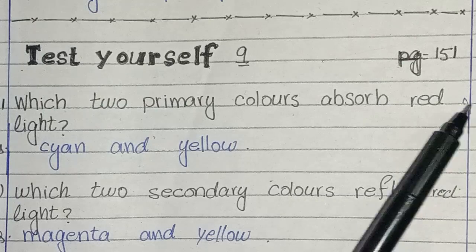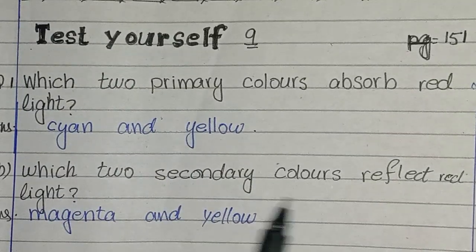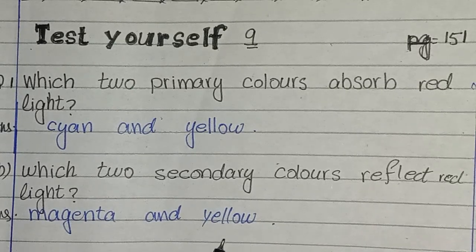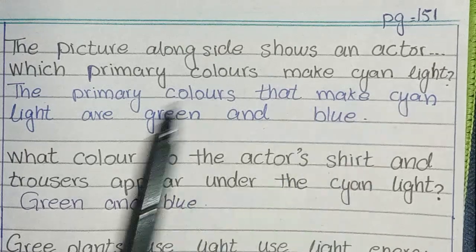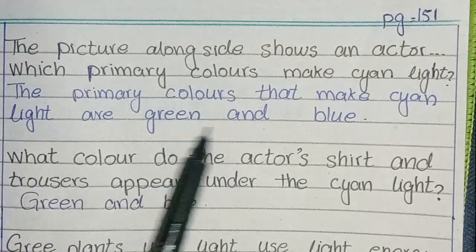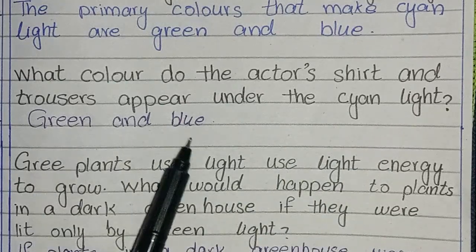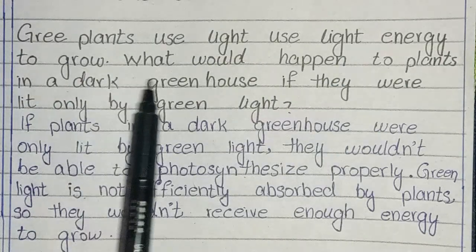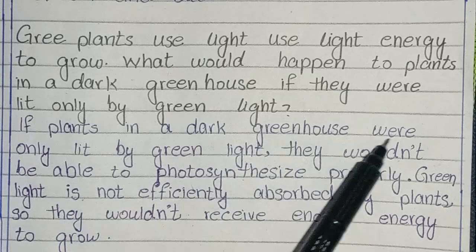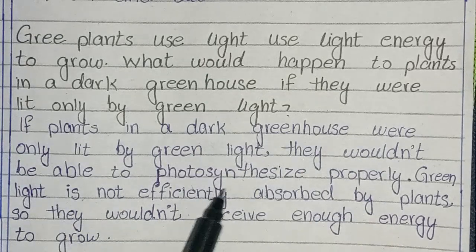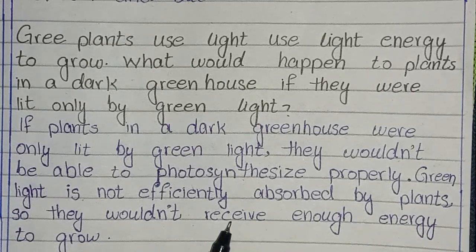Test Yourself 9, page 151. First question: which two primary colors absorb red light? The answer is Cyan and Yellow. Which two secondary colors reflect red light? Magenta and Yellow. Which primary colors make cyan light? The primary colors that make cyan light are Green and Blue. What color do the actor's shirt and trousers appear under cyan light? Green and Blue. Green plants use light energy to grow — what would happen to plants in a dark greenhouse lit only by green light? They wouldn't be able to photosynthesize properly, as green light is not efficiently absorbed by plants, so they wouldn't receive enough energy to grow.